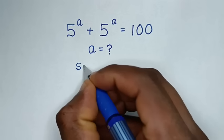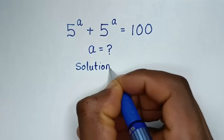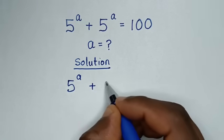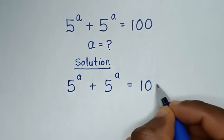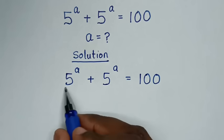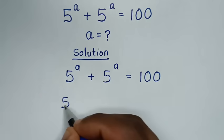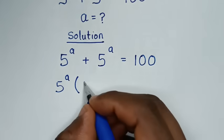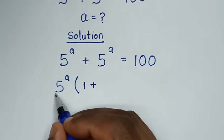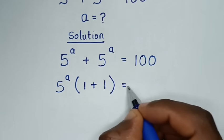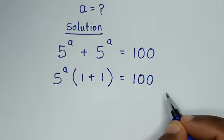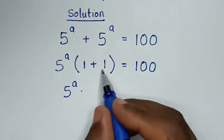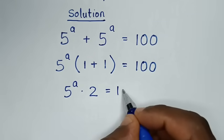Now, the solution. For the problem 5 power a plus 5 power a is equal to 100. On the left side, 5 power a is common. So take 5 power a out of the bracket: 5^a divided by 5^a is 1, plus 5^a divided by 5^a is 1, in the bracket, equal to 100. Then in the next step it will be 5 power a times 1 plus 1, which is 2, is equal to 100.